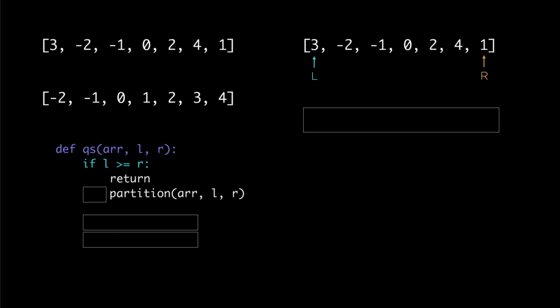The first step for partitioning is to pick what's called a pivot, and there are different ways of choosing it. One simple approach is to pick the last element as your pivot. Then the goal of the partition function is to divide the array into two groups: the first group is all numbers less than the pivot, and those should come to the left of the pivot. The second group is numbers greater than the pivot, which should come to the right.